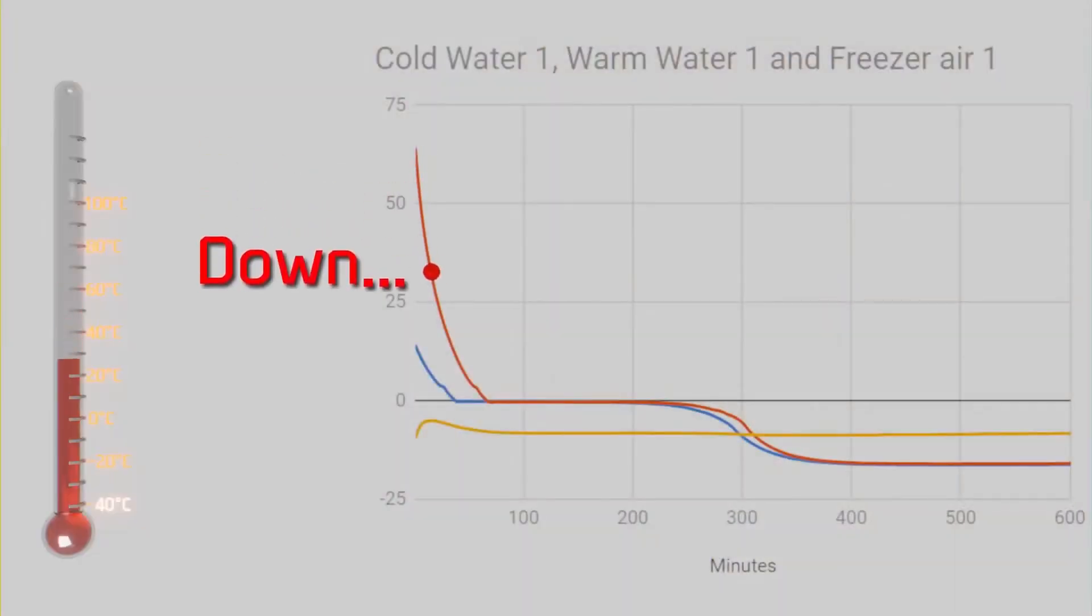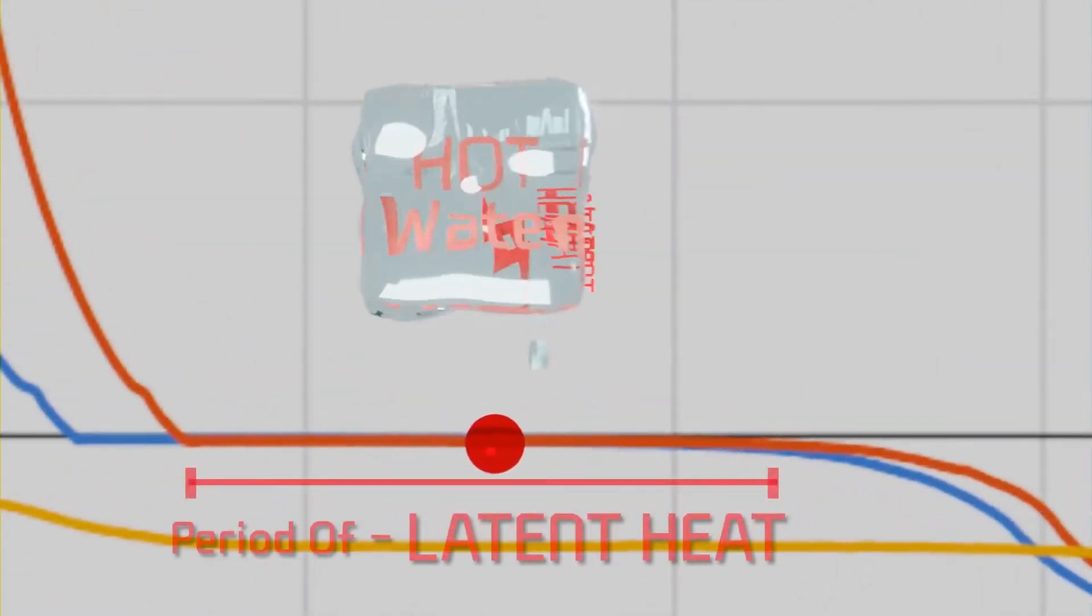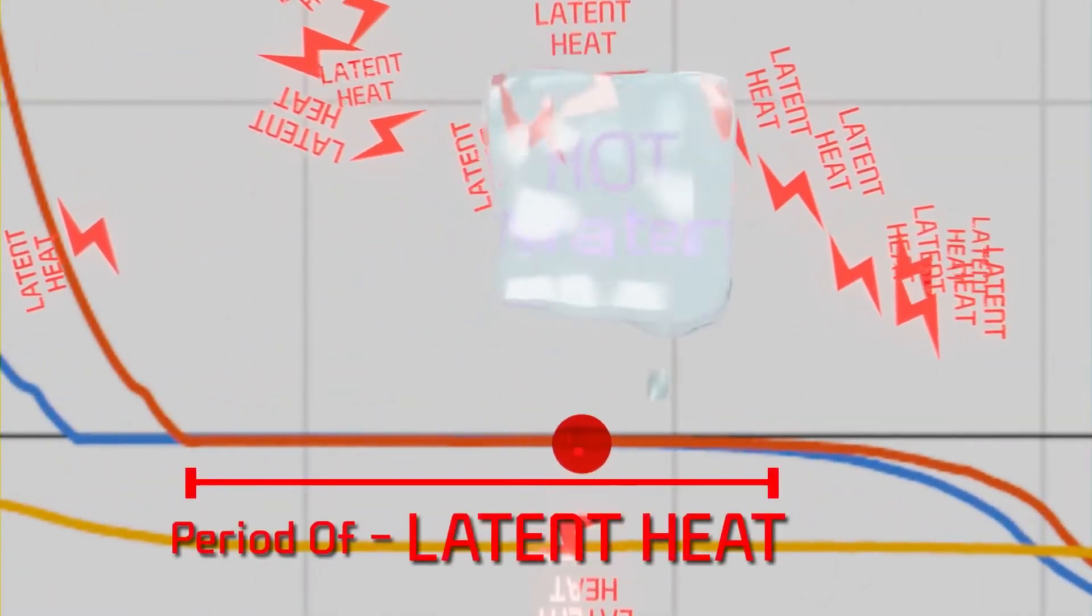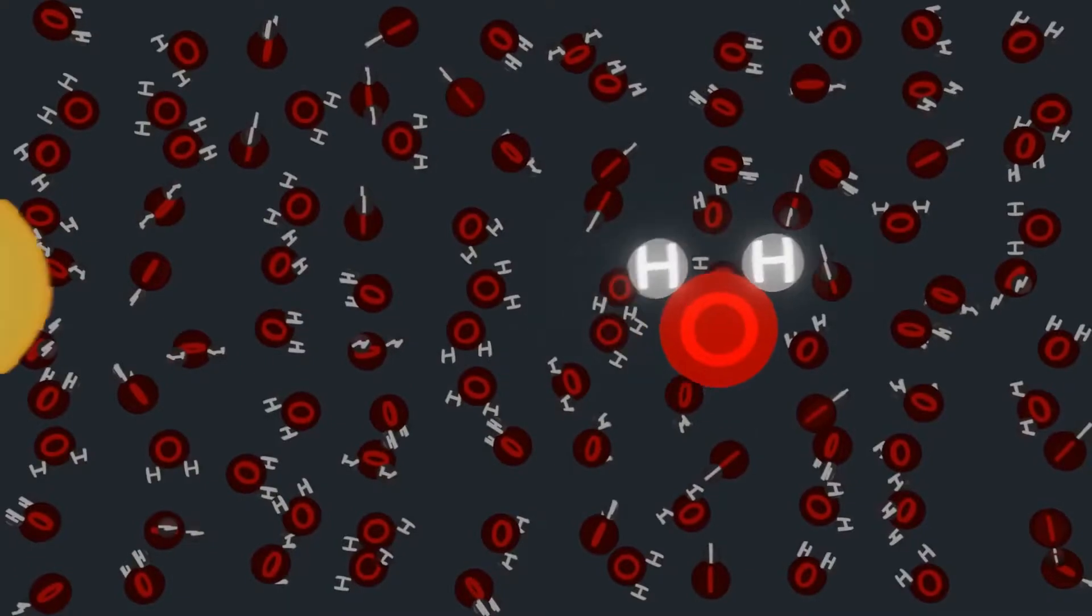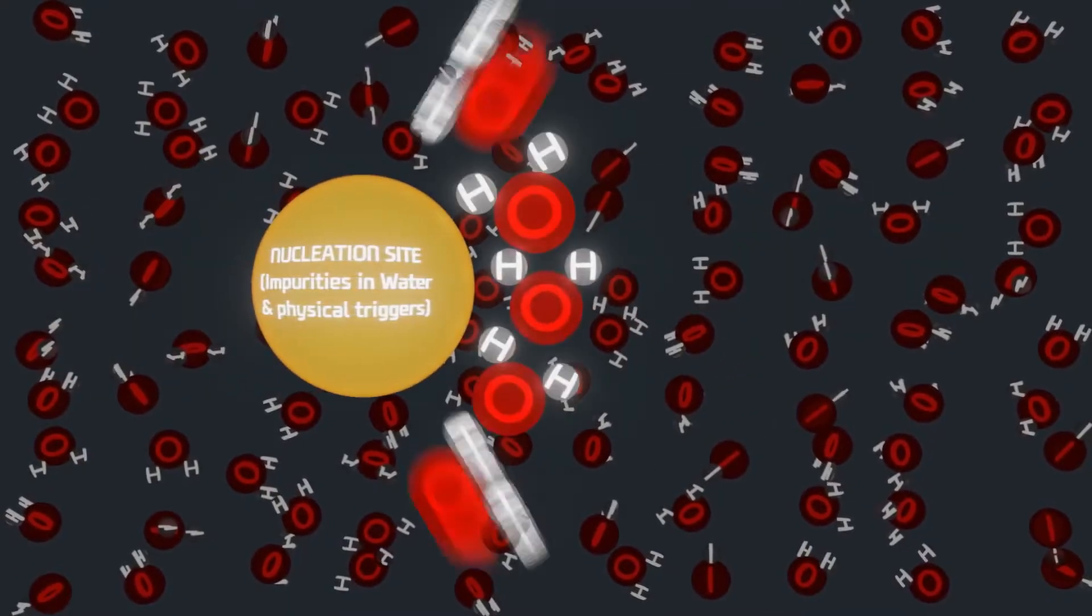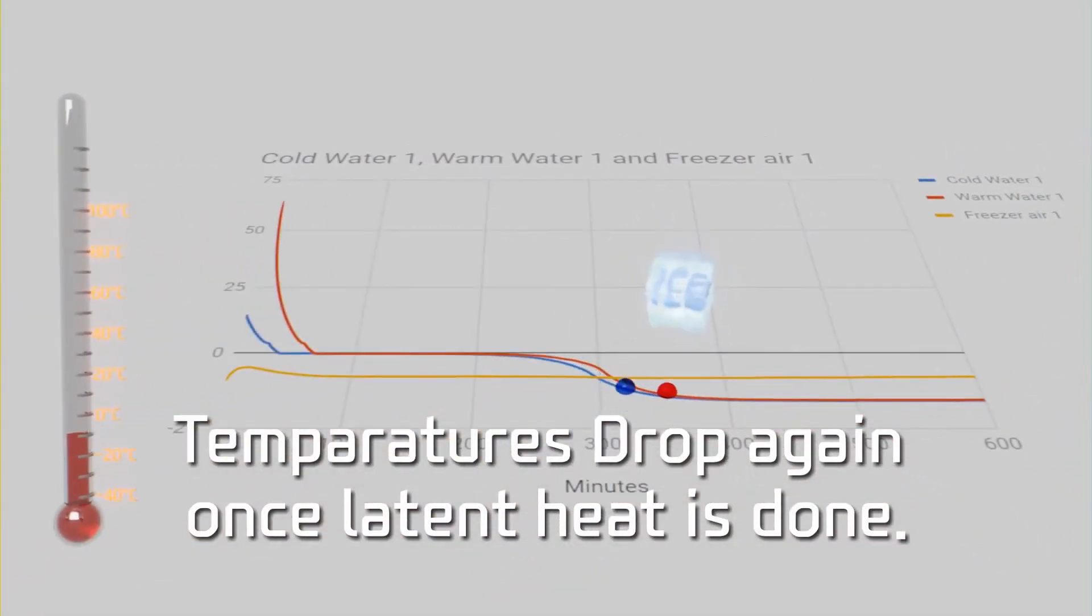When the temperature of the water was going down, it halted at a temperature near zero. During this pause, latent heat, a form of energy, is spent to let ice crystals grow around a random nucleus or nucleation site. Only after fully becoming solid, temperatures started to drop again.